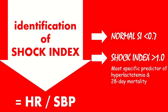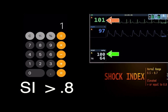This figure shows the normal shock index as less than 0.7, and a shock index of more than 1 is the most specific predictor of hyperlactemia and 28-day mortality. This scale shows the normal range of 0.5 to 0.7, and it is elevated when it is more than or equal to 0.8. According to different scales there may be different variations.